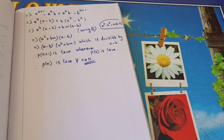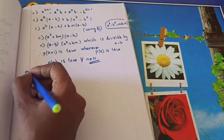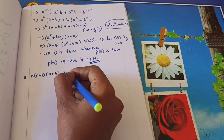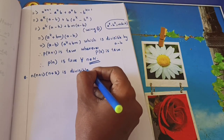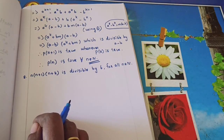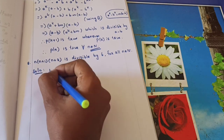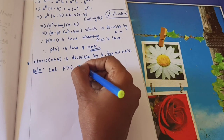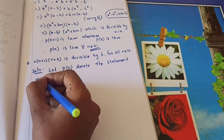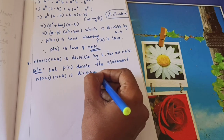Let us move to the next problem. Problem 7 I gave as homework — I hope you all completed. Let us move to problem number 8. Problem 8: n(n+1)(n+2) is divisible by 6 for all n belongs to ℕ. Let p(n) denote the statement: n(n+1)(n+2) is divisible by 6.